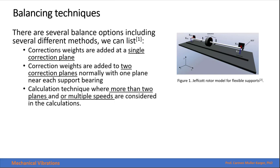There are several balance options, including several different methods. We can list some of them, which are correction weights that are added at a single correction plane, correction weights added at two correction planes. Normally, those two planes are close to the supporting bearings.